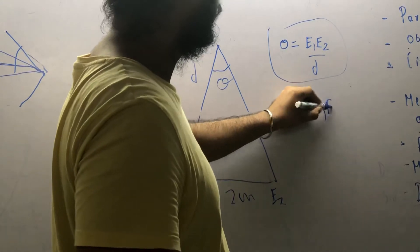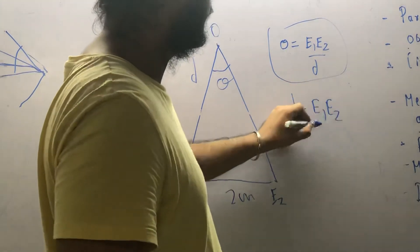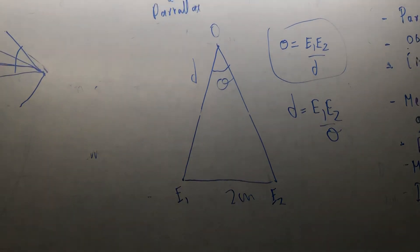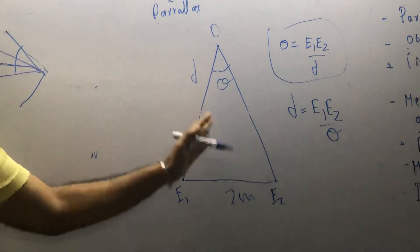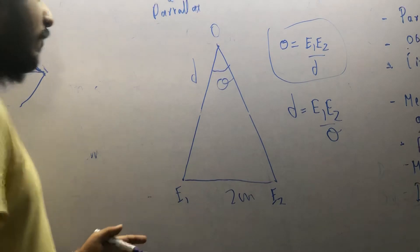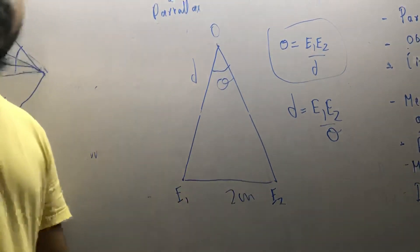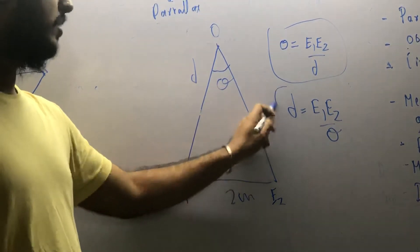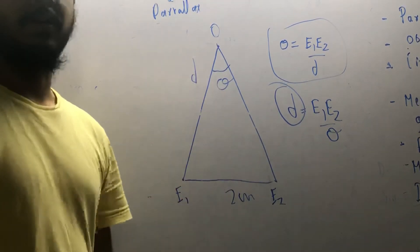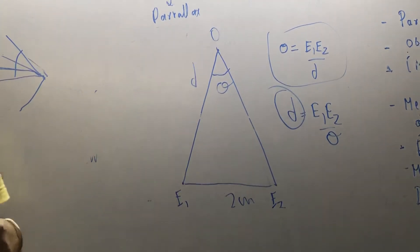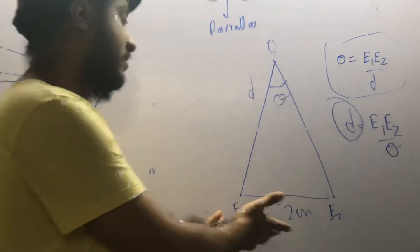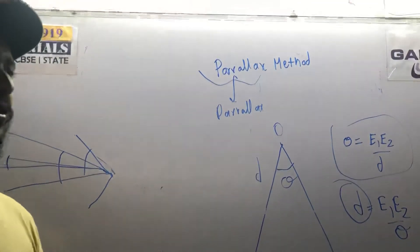The distance d equals E1E2 divided by theta. You can measure the angle theta, and you know the distance between your eyes, so you can find the distance d between the star and the Earth. However, this method is not very accurate because the distance between the eyes is very very small.